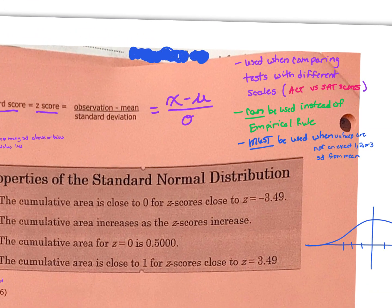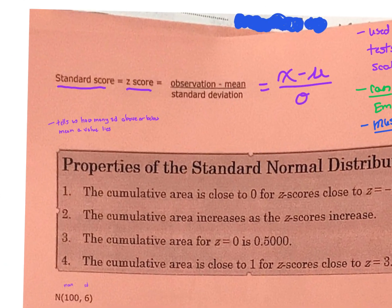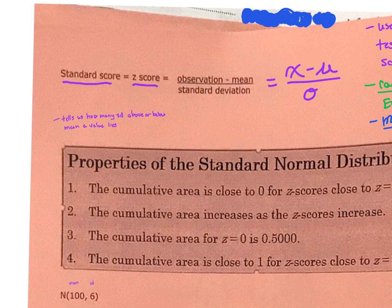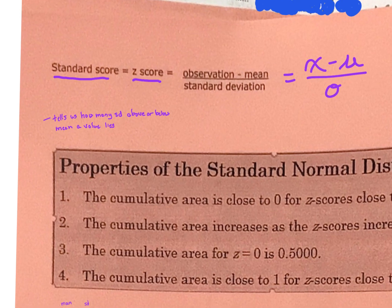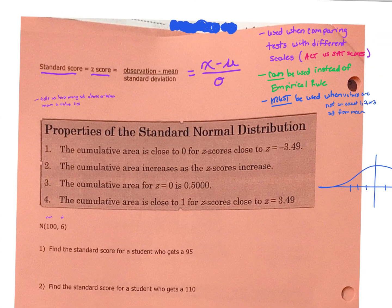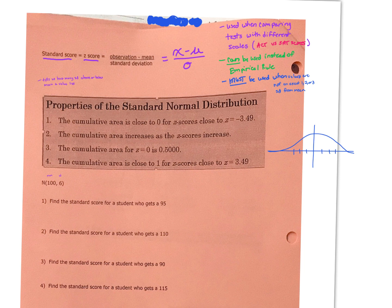The z-score tells us how many standard deviations above or below the mean a particular value lies. There are some properties of standard normal distributions and z-scores I want to explain. Then we'll look at some examples, both visually and mathematically. Let's go through these properties.